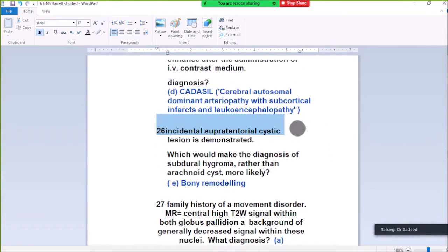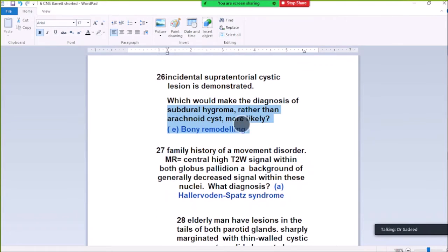Question number 26. In this case of subdural tentorial cystic lesion, we will make a diagnosis of subdural hygroma rather than arachnoid cyst. Subdural hygroma shows bone remodeling, whereas arachnoid cyst does not show bone remodeling.